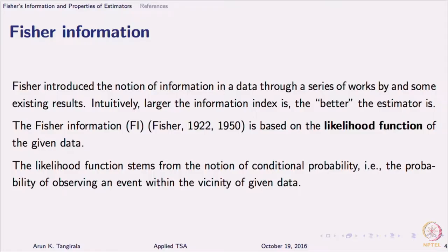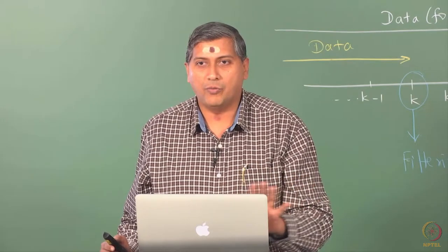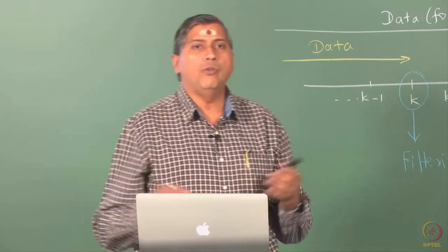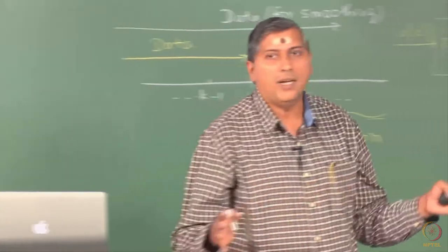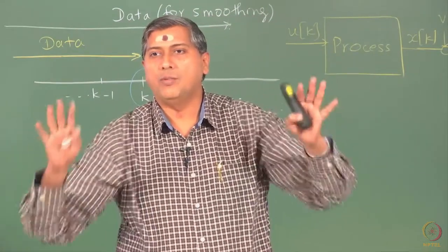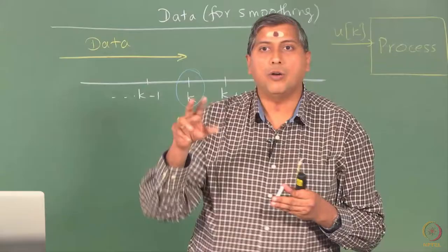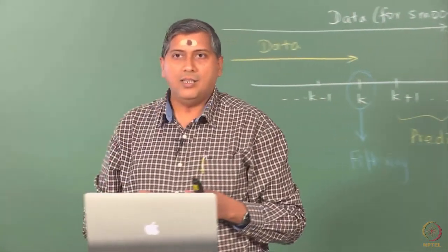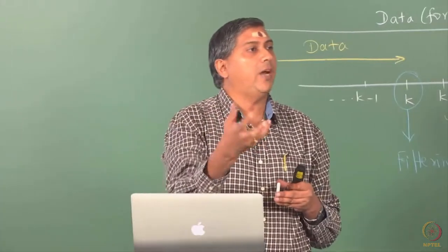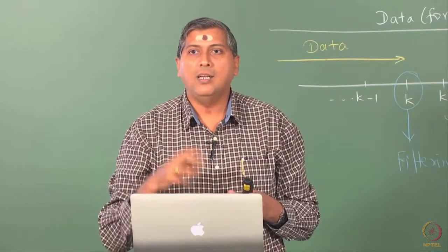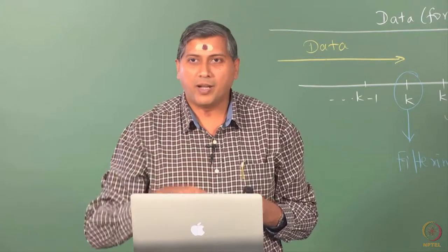Fisher coined this term 'likelihood' somewhat later; initially he used the term 'inverse probability.' His goal was to obtain optimal estimates of parameters of a distribution — a PDF. Suppose I generate data from some random number generator and give you the data and ask you to estimate the parameters of the PDF. There are two things required: first, you have to guess the PDF — which distribution I have sampled from — and then estimate the parameters of that PDF.